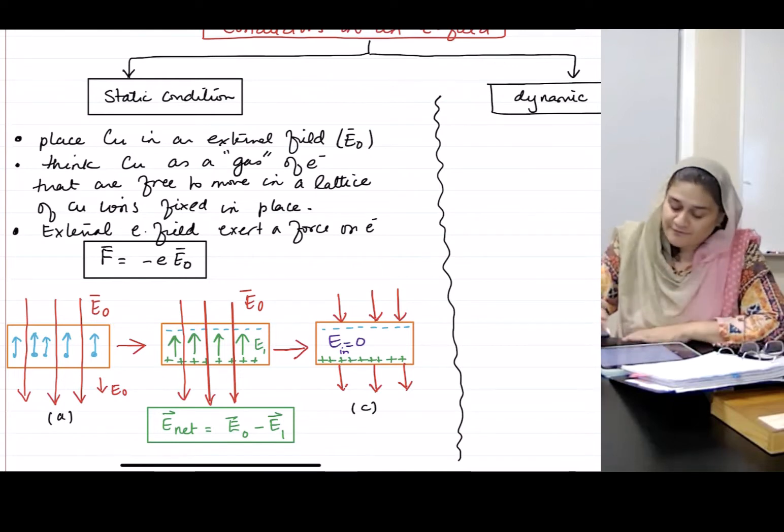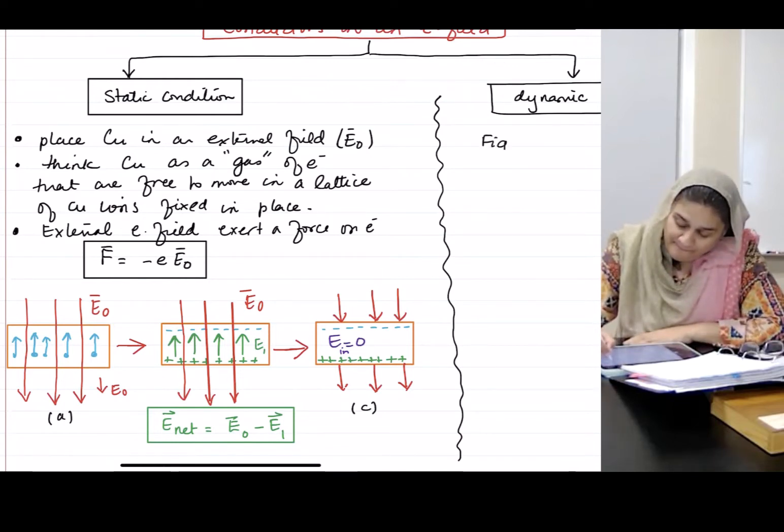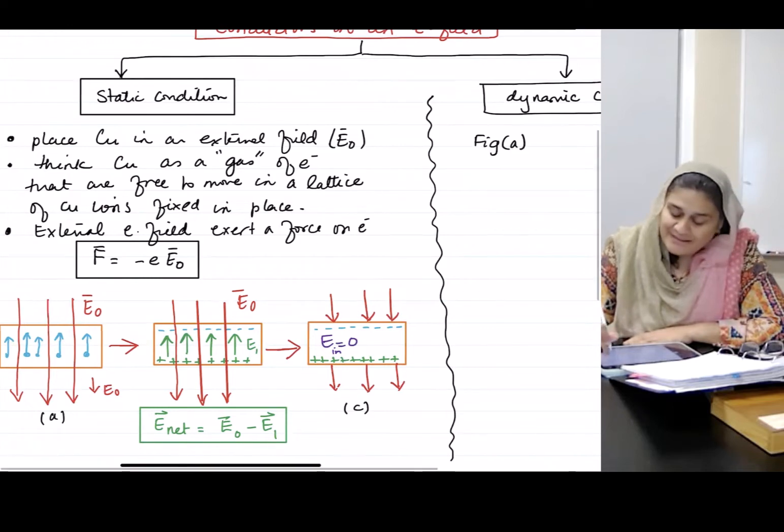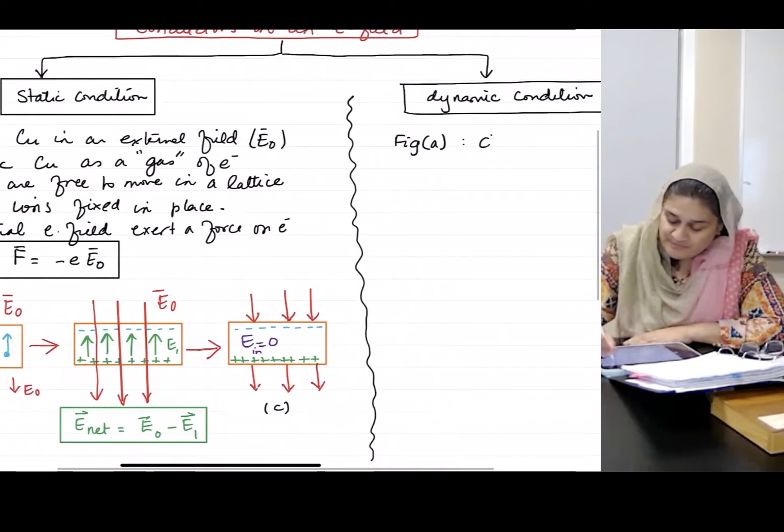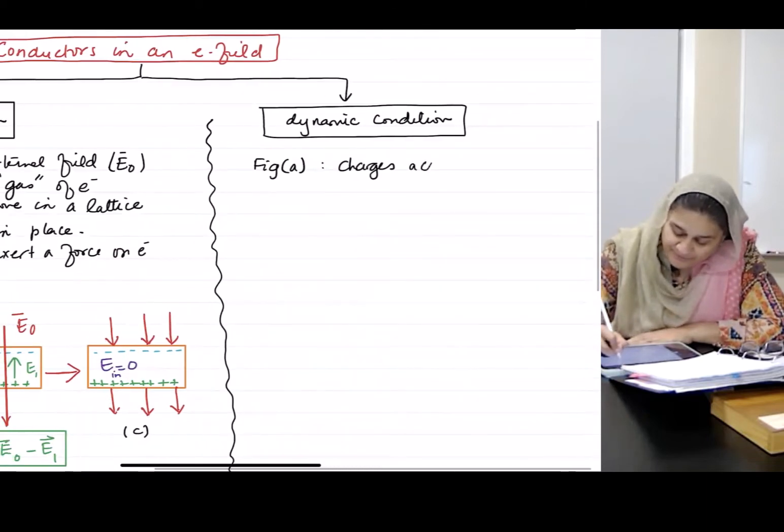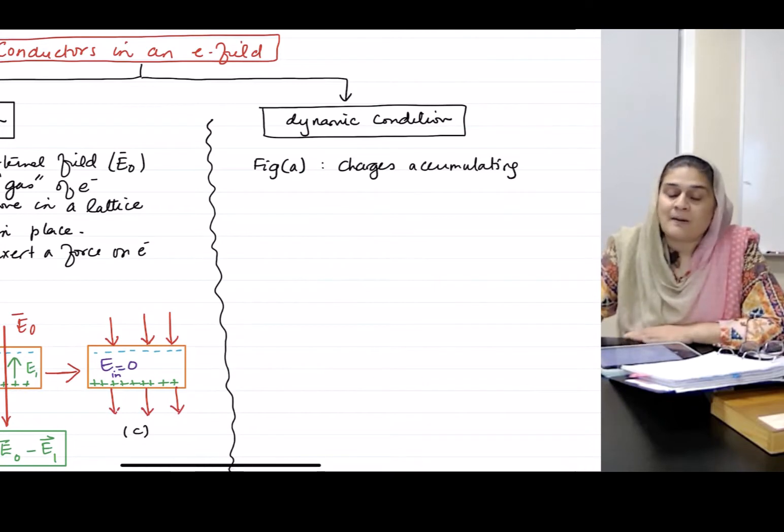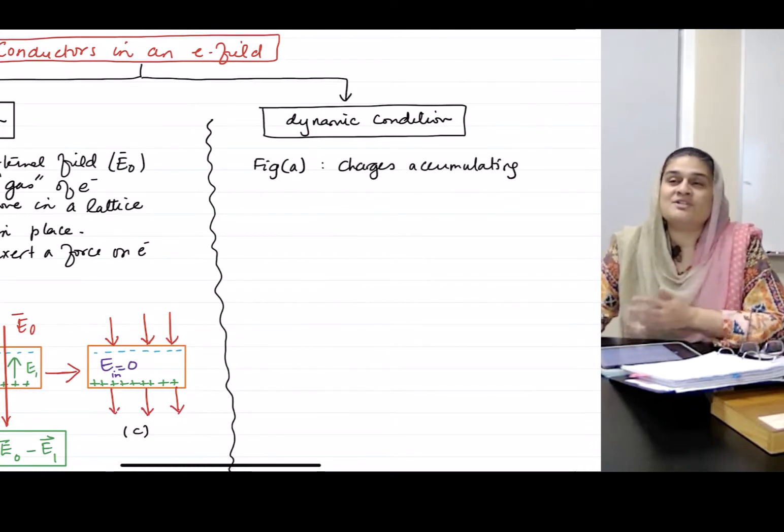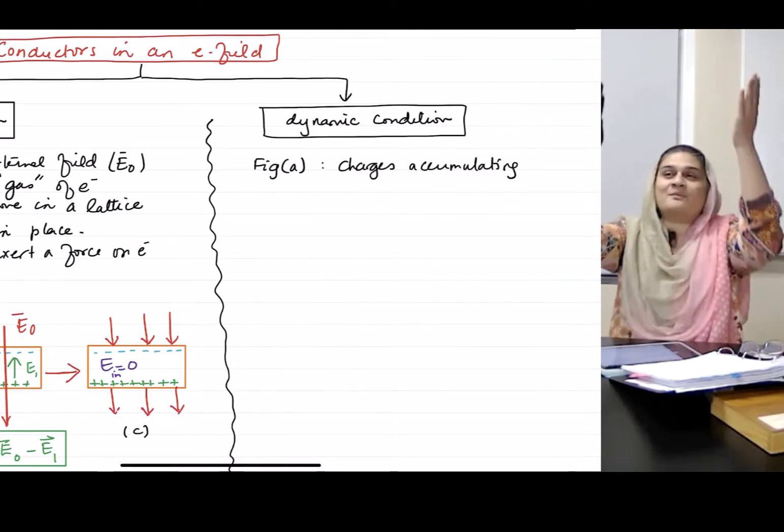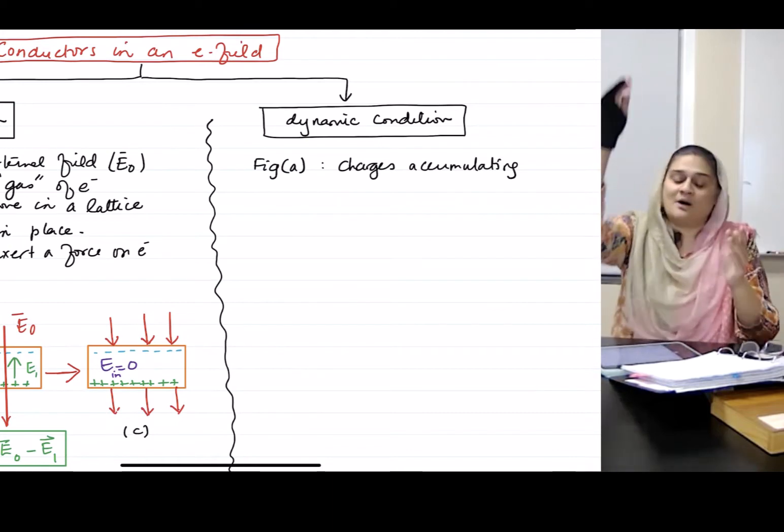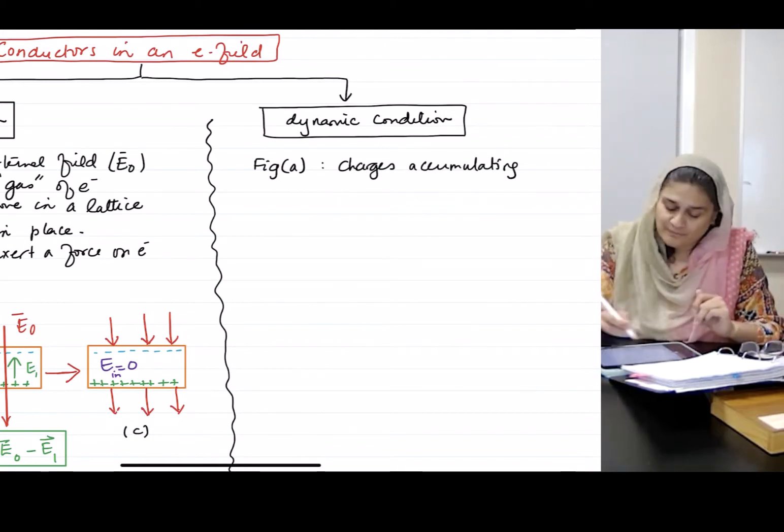What if I take figure A and instead of charges accumulating, the charges are made to just be able to go where they want to go? They want to continue onwards.